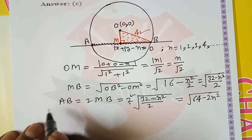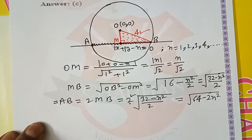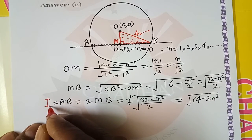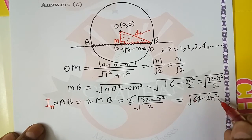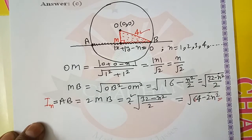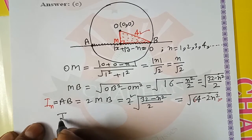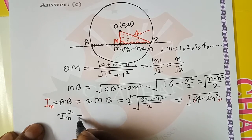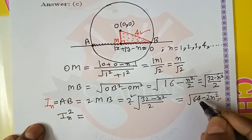OB squared is 16 and OM squared is n squared by 2. This equals under the root 32 minus n squared divided by 2. The intercept AB is double of this, which equals square root of 64 minus 2n squared.